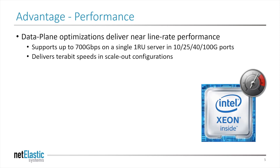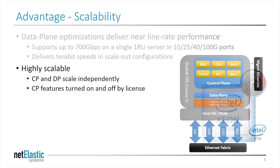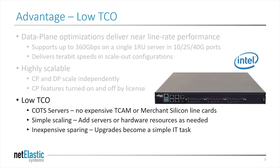There are several key advantages to the Netelastic V-Router. The first is performance. It can forward up to 700 gigabits per second on a 1RU server over 10, 25, 40, and 100 gig ports, and you can achieve terabits of backplane capacity in a scale-out cluster. The control and data planes scale independently, allowing you to assign resources to either the data plane when raw performance is required, or to the control plane when packet processing is most important. You can turn on features up front or over time. And because it runs on x86 servers, the cost to deploy a V-Router is about 30% of the cost of a proprietary ASIC-based solution.